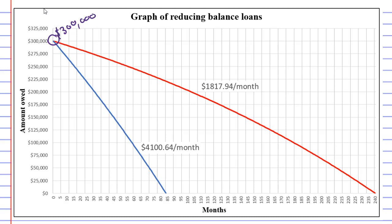So what's different about these? Well, what's different is the repayments. We have a payment of $1,817.94 for the red graph. And then for the blue graph, we've got a much larger payment of $4,100.64.